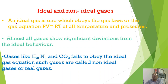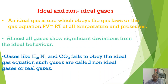Such gases are called non-ideal gases or real gases. An ideal gas obeys the gas equation PV = RT at all temperatures — meaning whatever the postulates of ideal gas theory, those should be obeyed. If a gas obeys PV = RT, that gas is called an ideal gas.